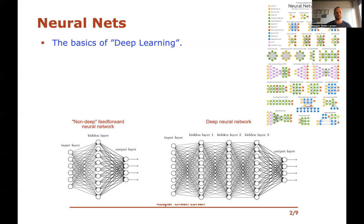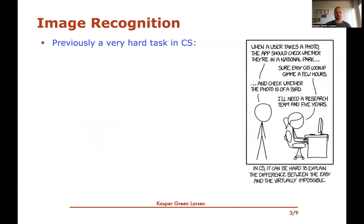Neural networks really form the basics of what's called deep learning. Let's take an application area where neural networks have really made a big difference — and that is image recognition.